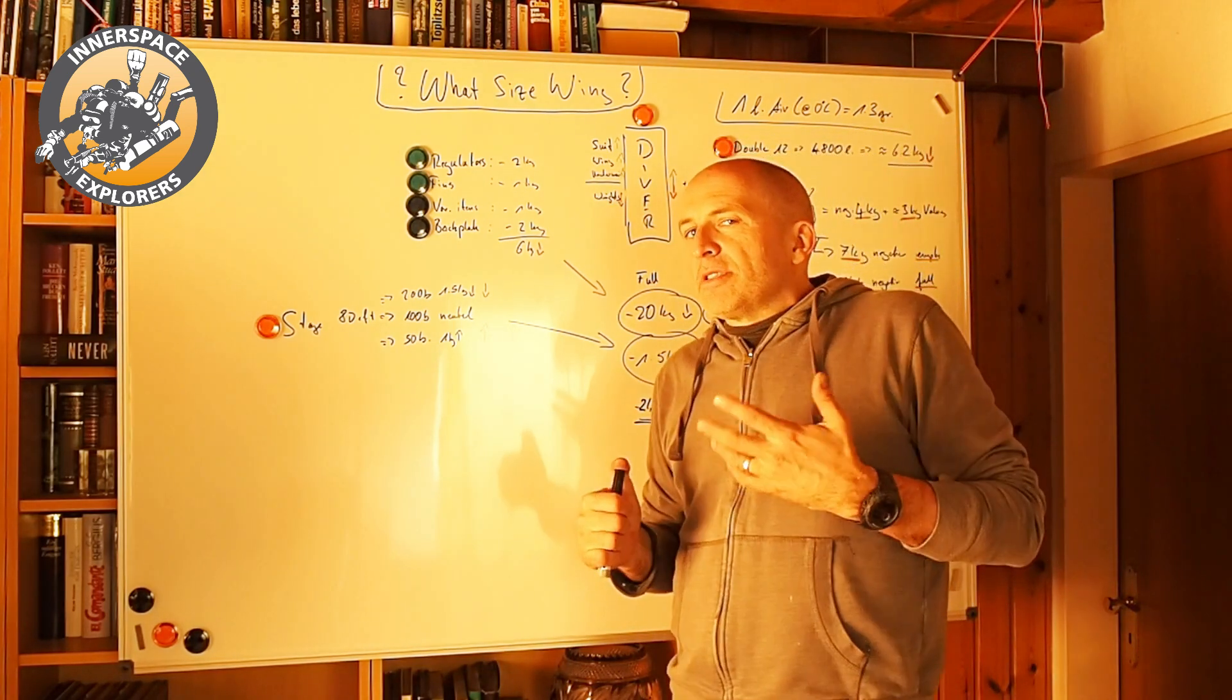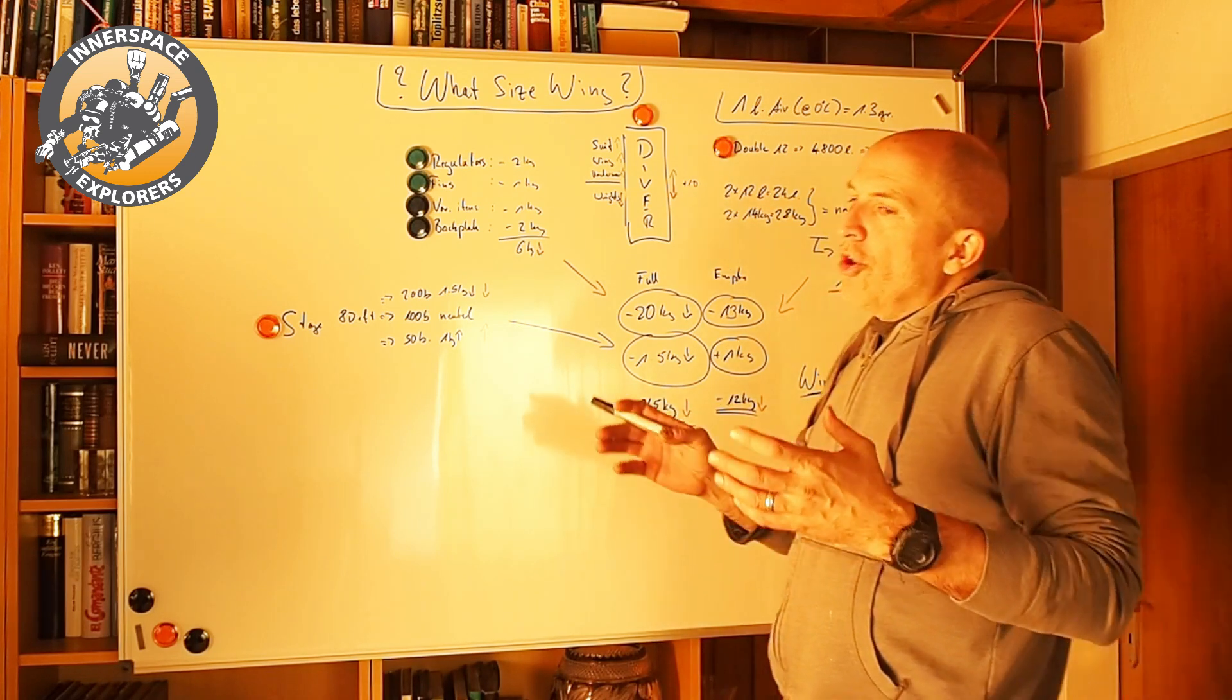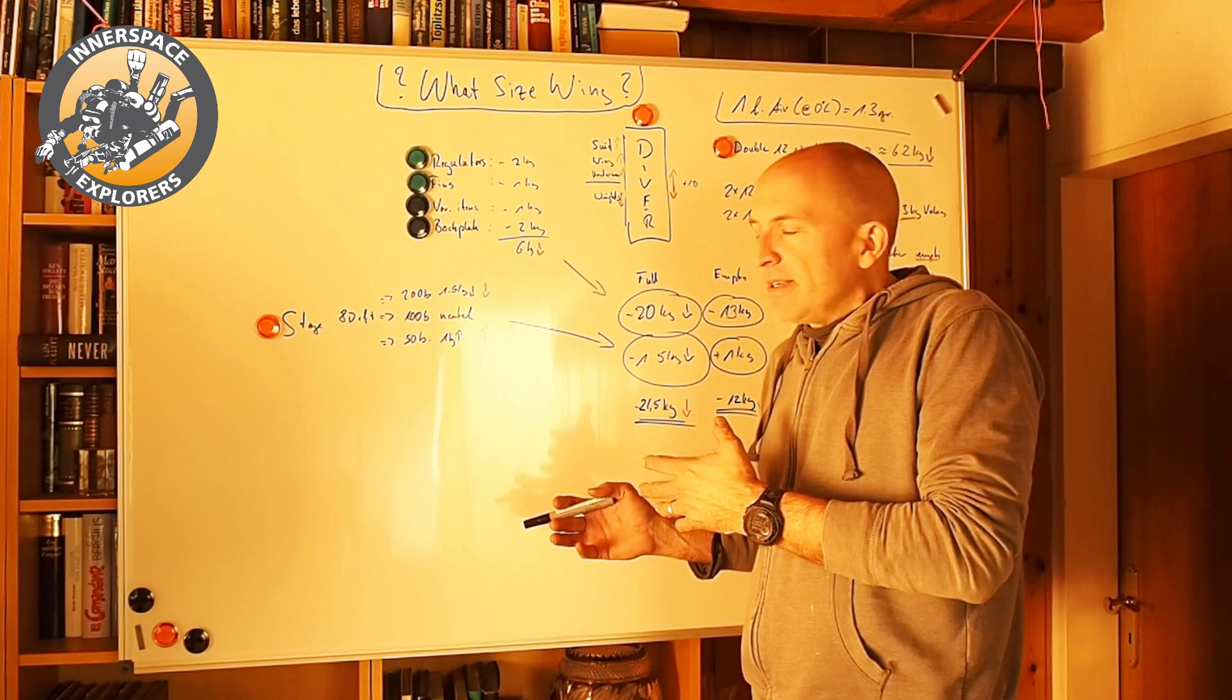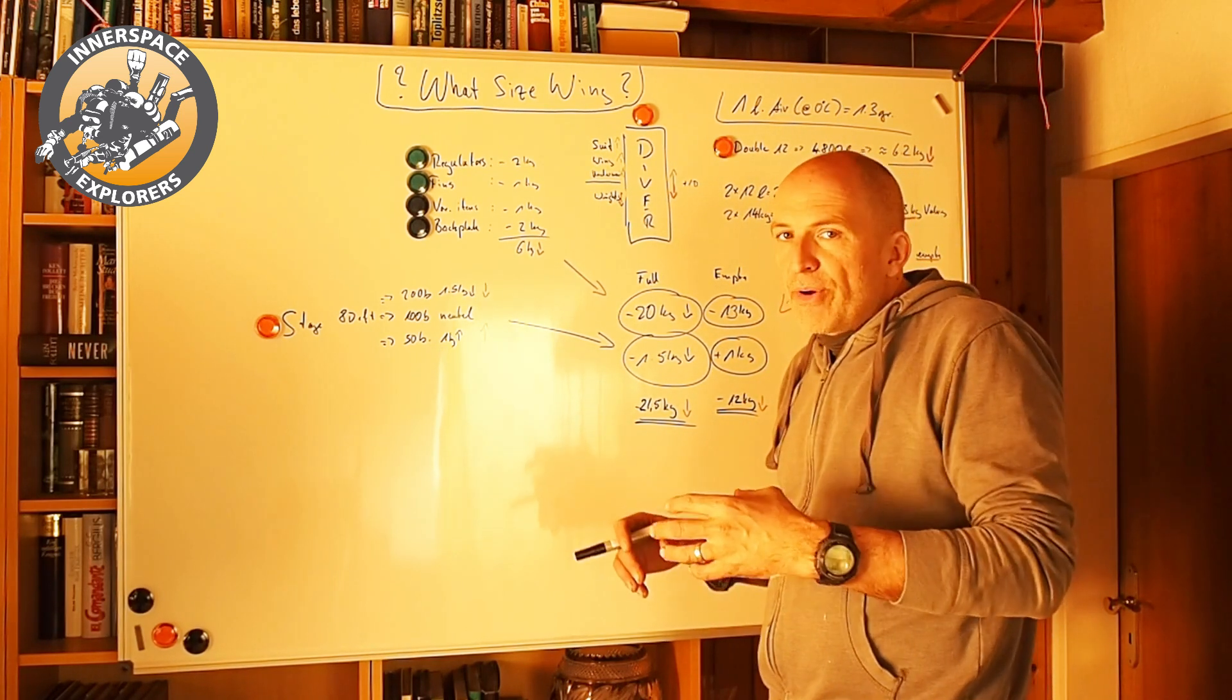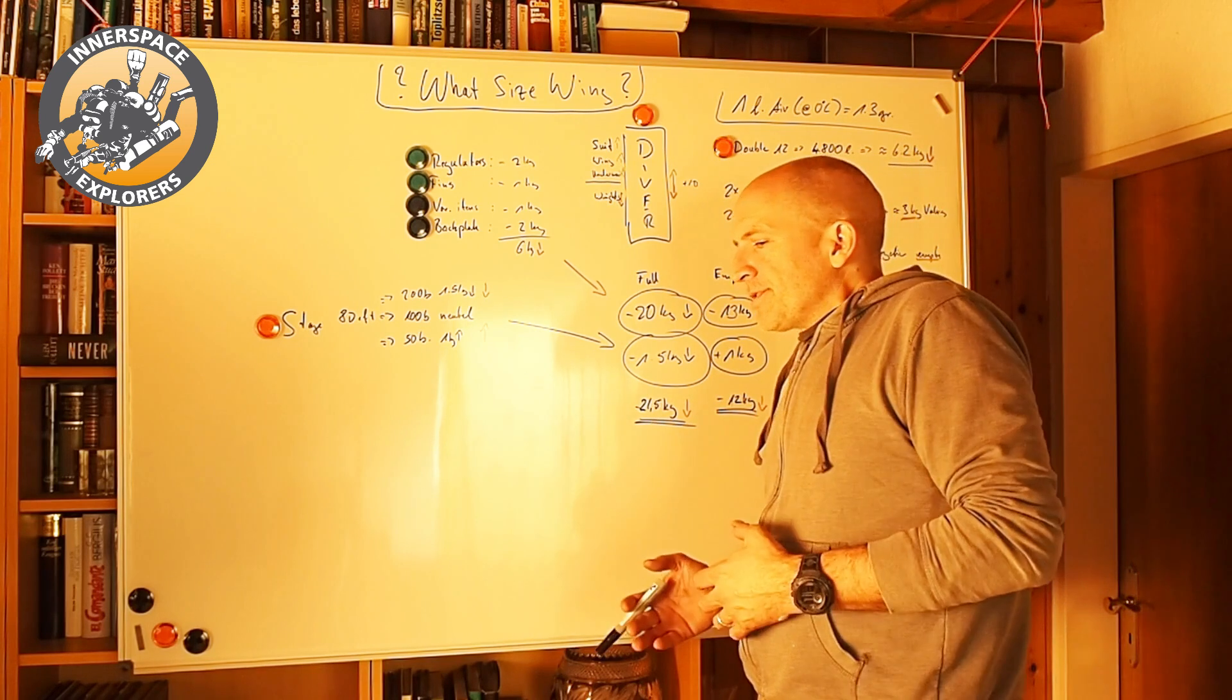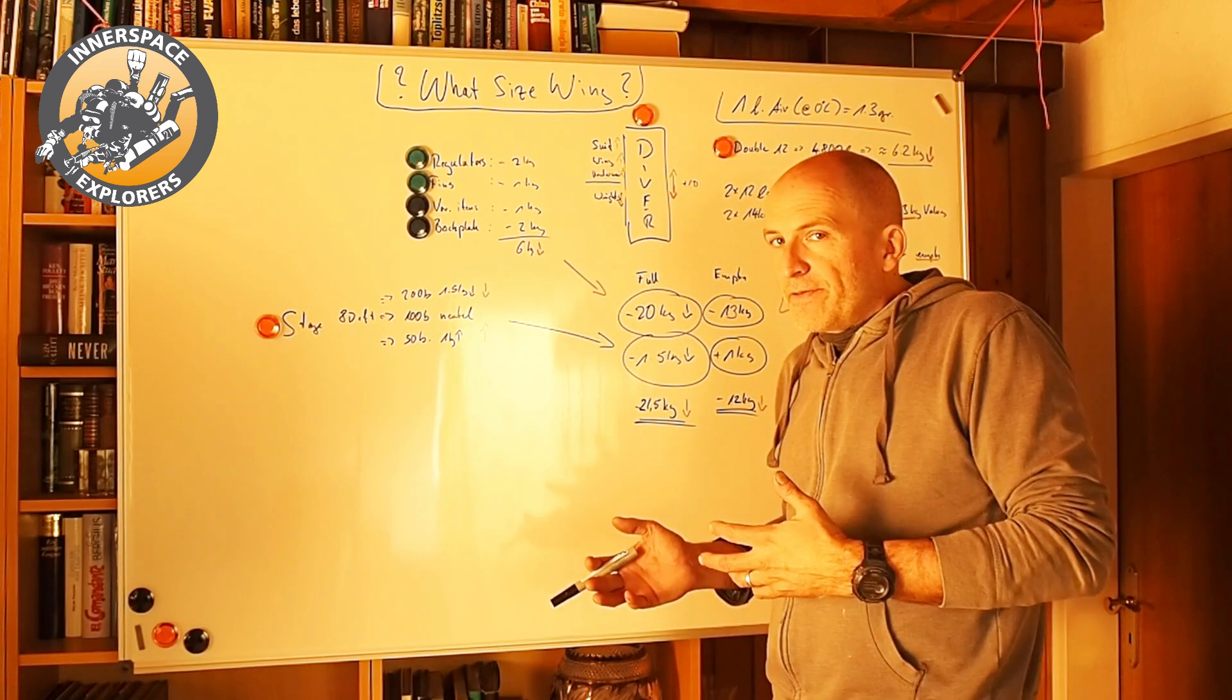So we can say that the wing definitely has to compensate 21.5 kilograms to keep our gear floated. And here comes the concept of the balanced rig. And that also goes back to the old saying, no steel in ocean diving, which means no steel with a wetsuit. Because if your wing fails, can you swim that up in a wetsuit at depth, which is compressed, which doesn't have any buoyancy itself? Most probably not.